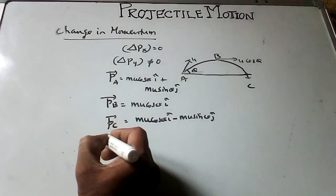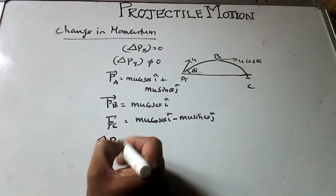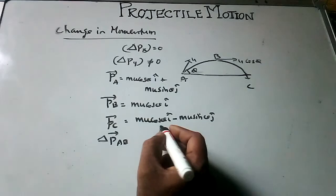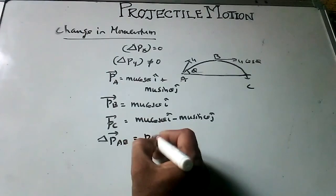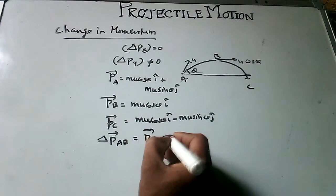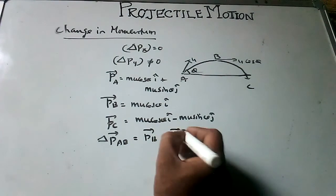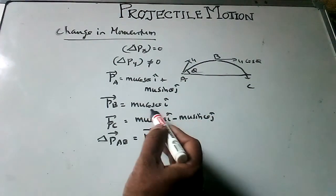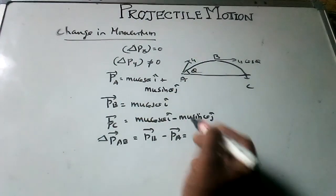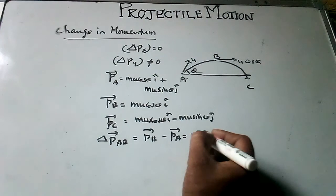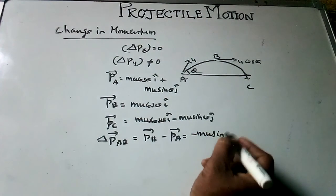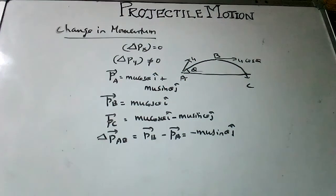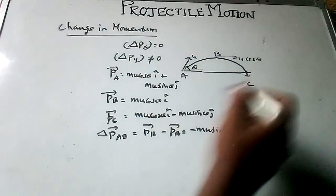Then change in momentum along AB equal to Pb minus Pa. If we subtract these two, mu cos theta i, mu cos theta i cancel, so minus mu sin theta j cap.